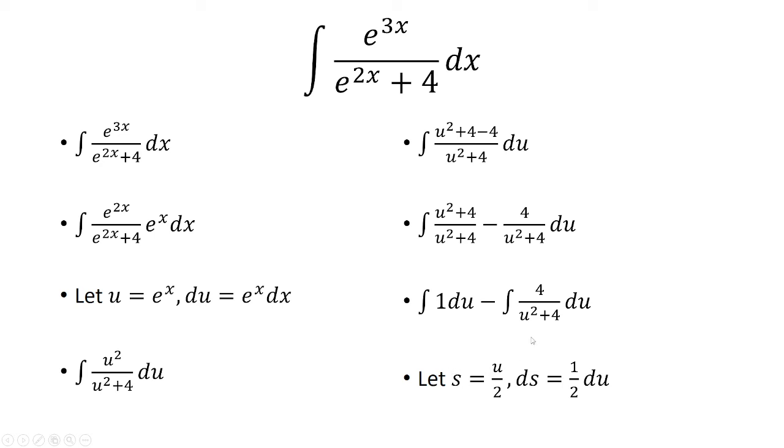So I'm going to let s equal u over 2. So ds is 1 half du. And the whole point of this substitution is to get s squared plus 1, and then multiply that by a constant.